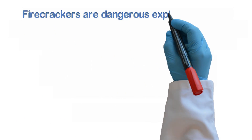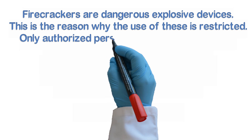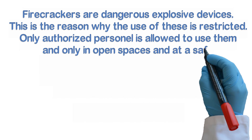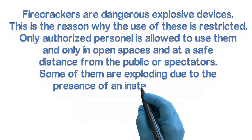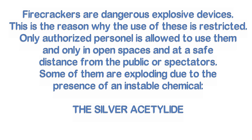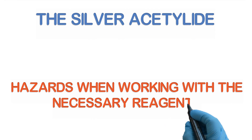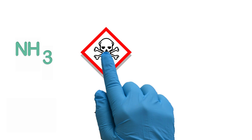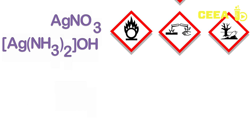The following experimental procedure is dealing with the synthesis of a unique compound sometimes used in pyrotechnics: silver acetylide. Its synthesis uses a wide range of chemicals, some of them toxic, others harmful or even explosive. Obey the safety rules for each of the used chemicals.